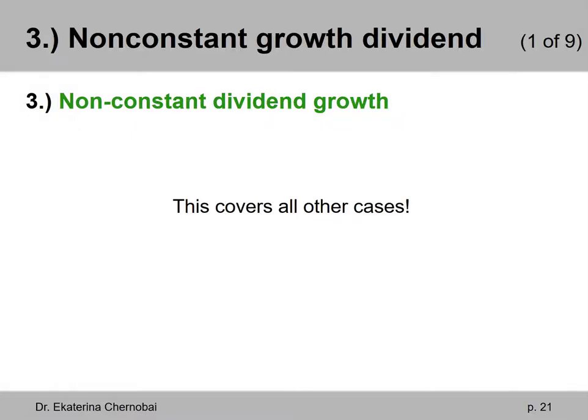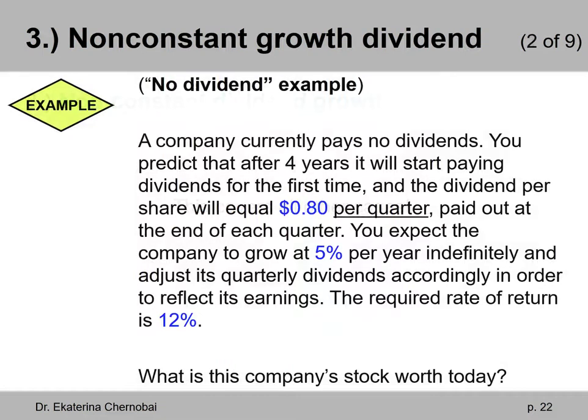Case number three is called non-constant growth dividend or non-constant dividend growth. Essentially, everything else that we have not covered is in case three. So let's look at this first example known as the no dividend example.